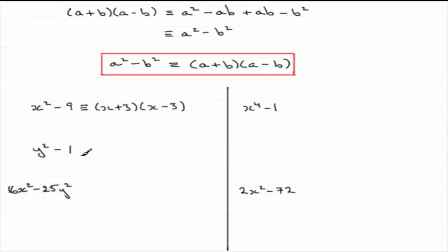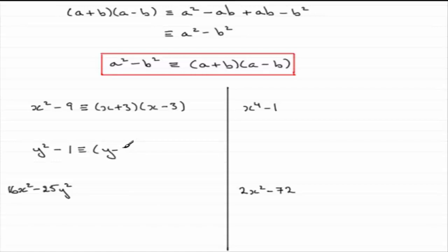In this example, y squared minus 1 — this is the difference of two squares. This is the square of y, and 1 is the square of 1, since 1 squared is 1. So the a would correspond to y, and b would correspond to 1. So we get that this is identical to y plus 1 times y minus 1. Or you could write it the other way round as y minus 1 times y plus 1.